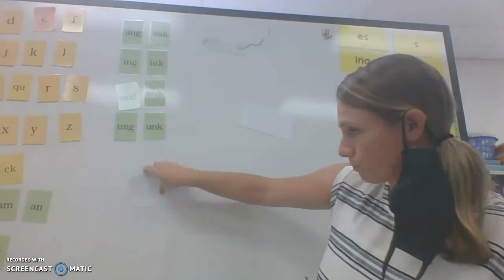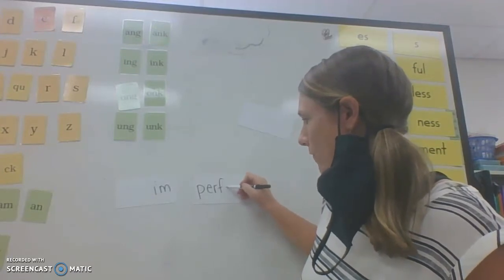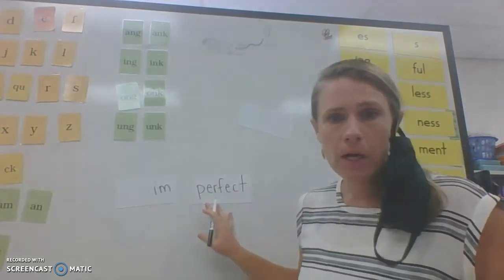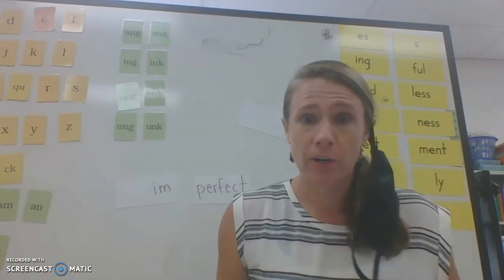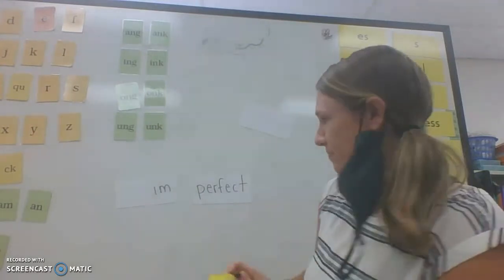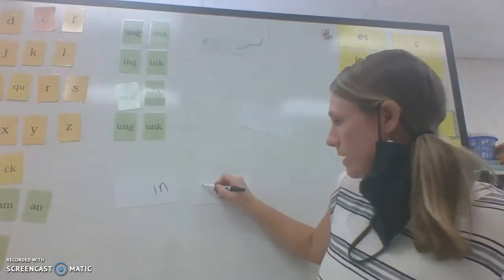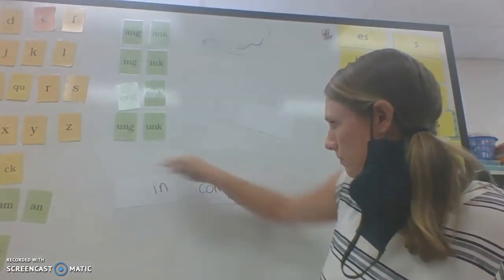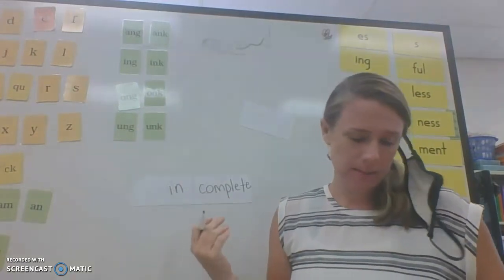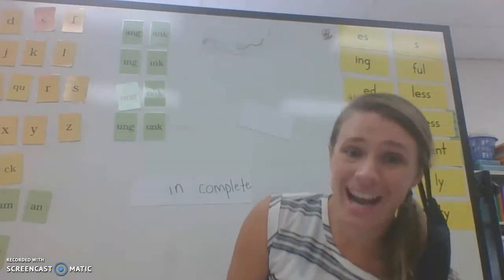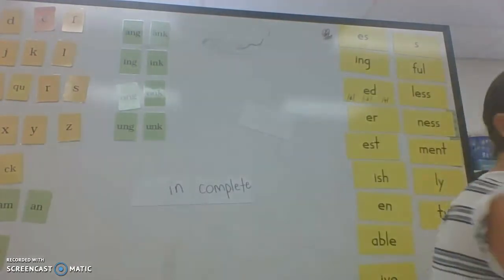Let's try a few more words. Im — perfect. What would 'imperfect' mean? Not perfect. I'll admit it — I am imperfect. You'll see me make lots of mistakes. See if you can read this next word: the prefix is 'in' and here is the base word — incomplete. What does it mean? Not complete. 'In' means not.